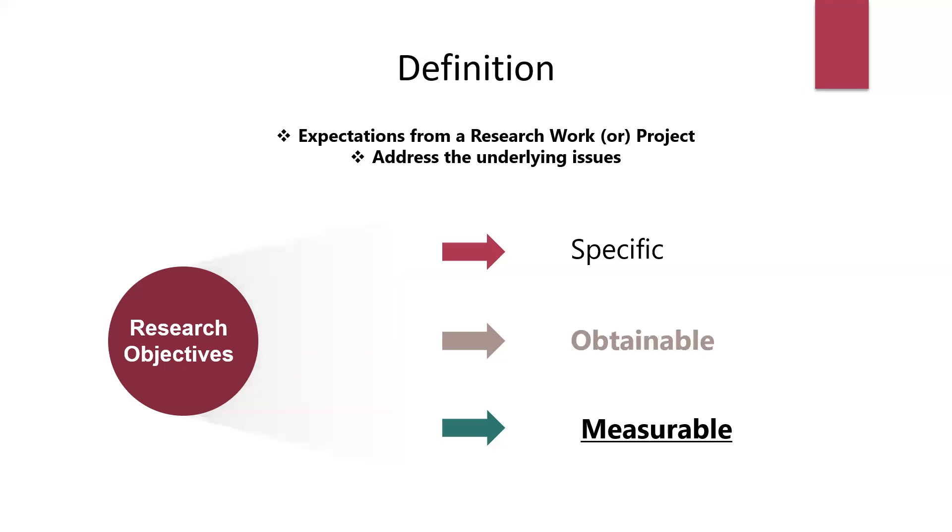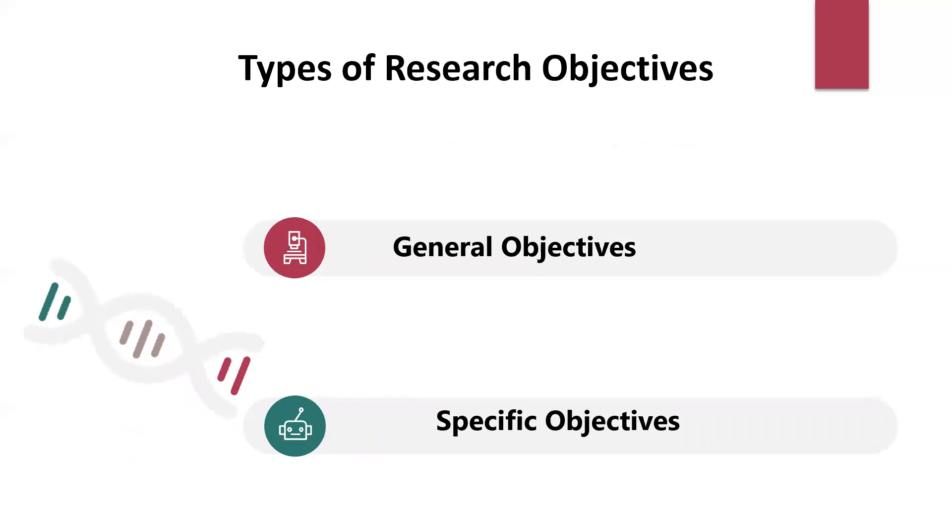Now moving from definition, let us go towards the types of research objectives. The very first type is general objectives. These general objectives are of a very broad sense—they are not in a narrower sense. We take a complete domain to explain our work. General objectives are the beginning of a research work and are very good for some case studies where we discuss a huge population.